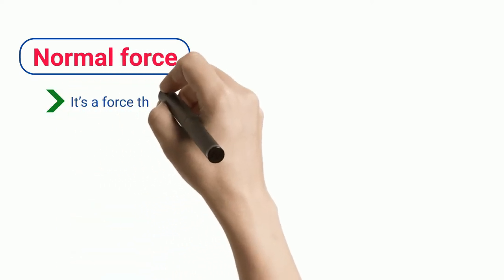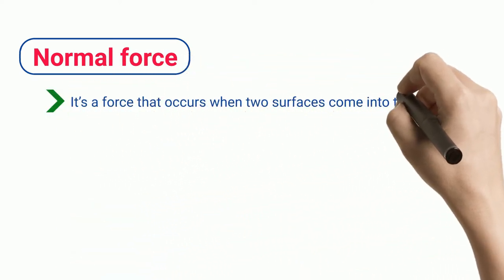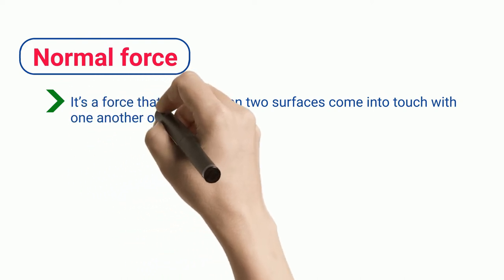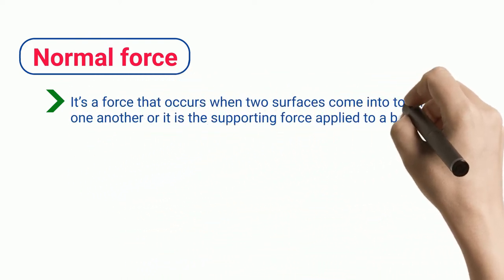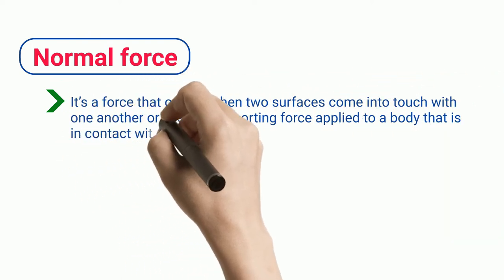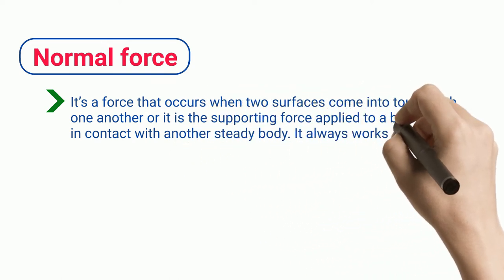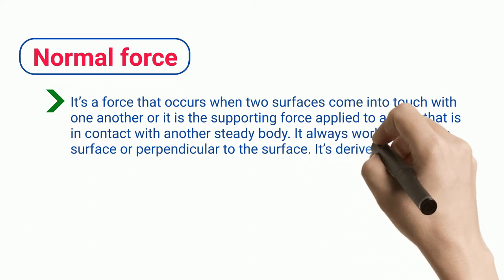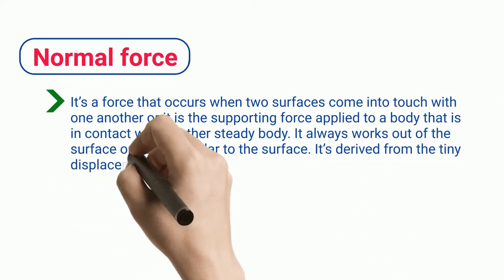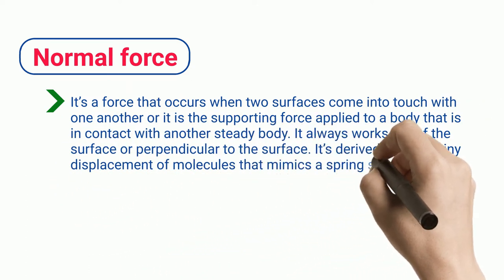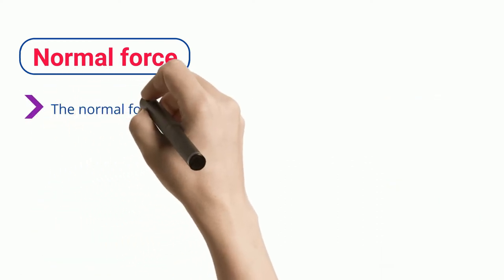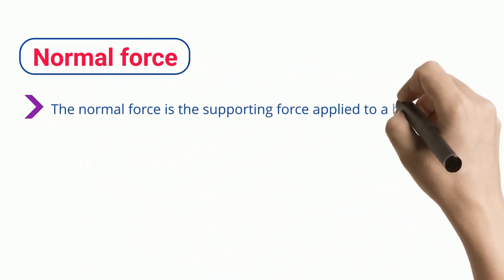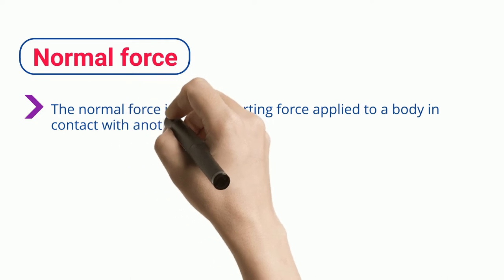Normal force is a force that occurs when two surfaces come into touch with one another, or it is the supporting force applied to a body that is in contact with another steady body. It always works out of the surface or perpendicular to the surface. It is derived from the tiny displacement of molecules that mimics a spring system.